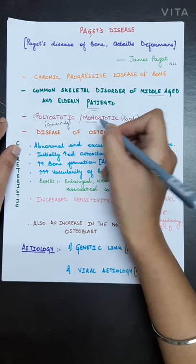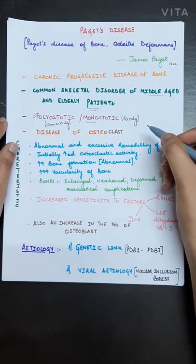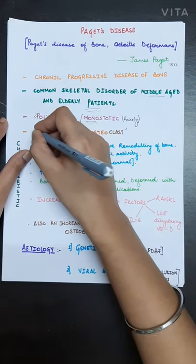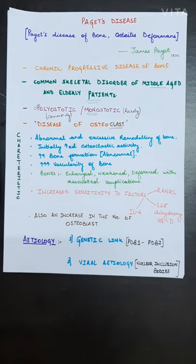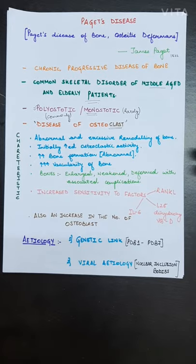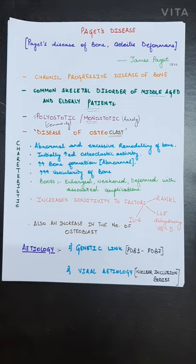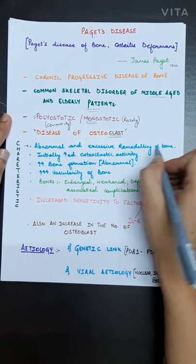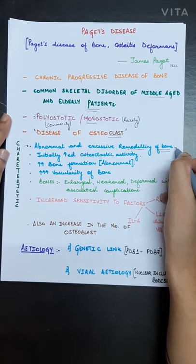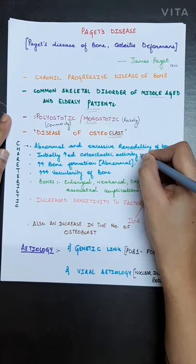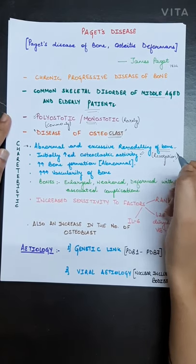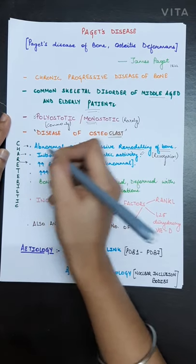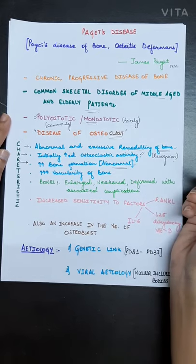Monoostotic means affecting only single bone. It is also called disease of osteoclasts. Osteoclasts are bone resorbing cells. Now there are few characteristics of Paget's disease as there is an imbalance between bone formation and bone resorption. Therefore there is abnormal or excessive remodeling of bone. Initially there is increased osteoclastic activity means increased resorption of bone. After that there is an increased bone formation which is abnormal.